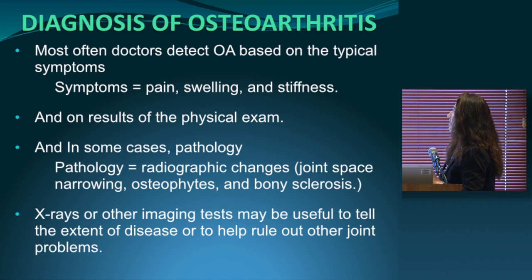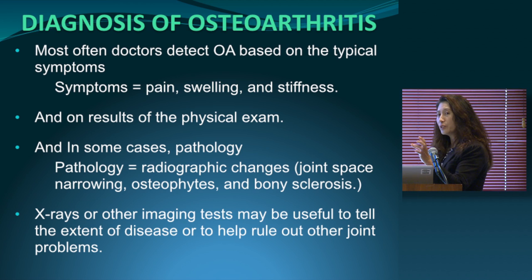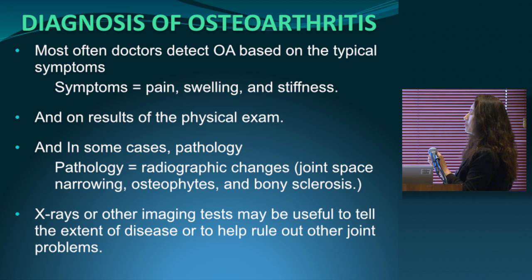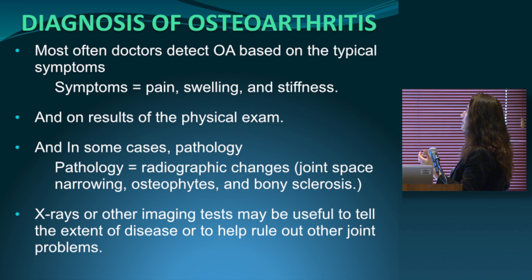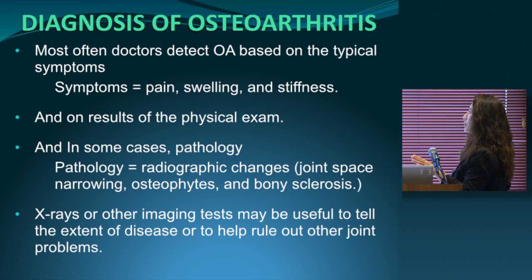Osteoarthritis is diagnosed based on typical symptoms such as pain, swelling, and stiffness, along with physical exam findings including joint swelling, range of motion, and any deformities. Radiographic changes like joint space narrowing, osteophytes (bone spurs), and bone sclerosis — appearing whitish on x-ray — are also used. X-rays or other imaging tests help see the extent of disease and rule out other joint problems.